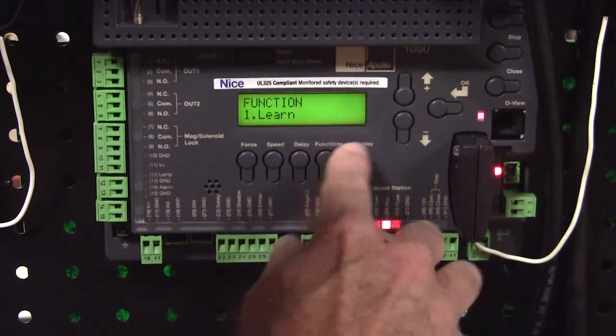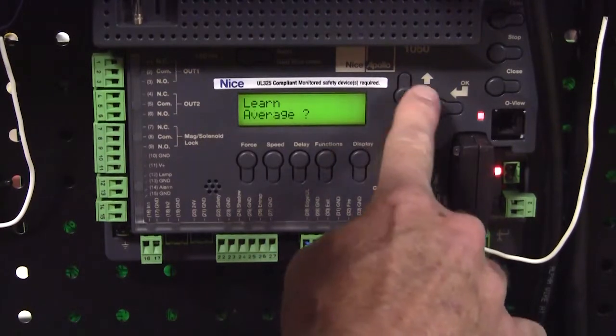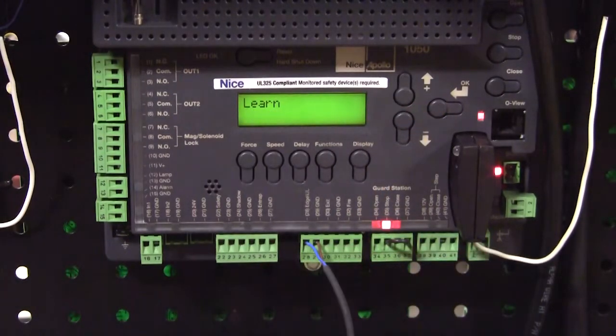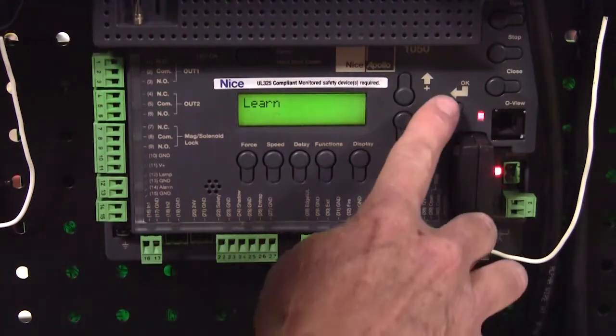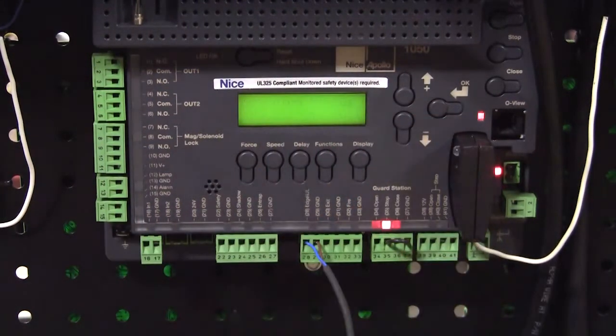So now if I go into my learn mode, learn, swing, average, I'm now ready to learn. I've got my motor connected, I've got my limits set, my gate is halfway open and halfway closed. I'm going to press ok.